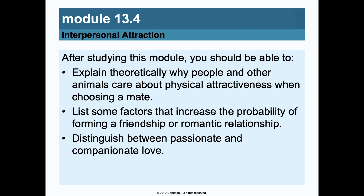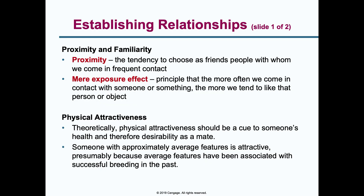Another topic in social psychology is how individuals establish relationships with others. One way is through proximity — we become friends with people we have frequent contact with, such as those who live near us or who we work with. Another way is through mere exposure: if we come into contact with someone or something, we tend to like that person or object. However, just becoming familiar with someone does not always increase our liking of them.